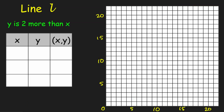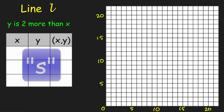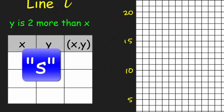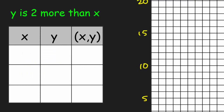Look at all this — we have a Line L. It says y is two more than x. So when x is one, what is the y coordinate if I apply the rule? Pretty easy — y must be three, because three is two more than one. I just add two to the one to get three. So my coordinate pair is going to be (1, 3). It's crucial that you remember the x value always comes first.